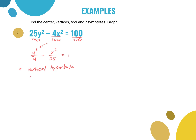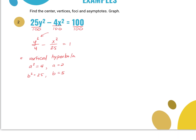A² is always under the first term, so a² = 4, meaning a = 2. B² = 25, meaning b = 5. Using c² = a² + b² = 4 + 25 = 29, so c = ±√29. This is a vertical hyperbola.